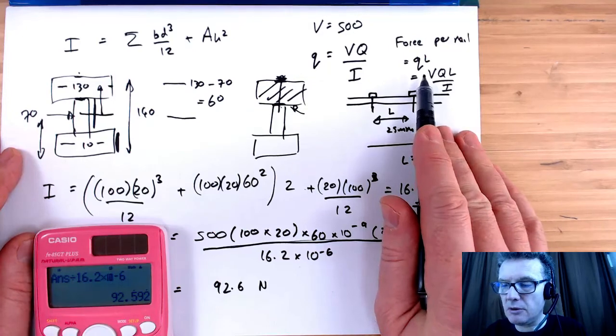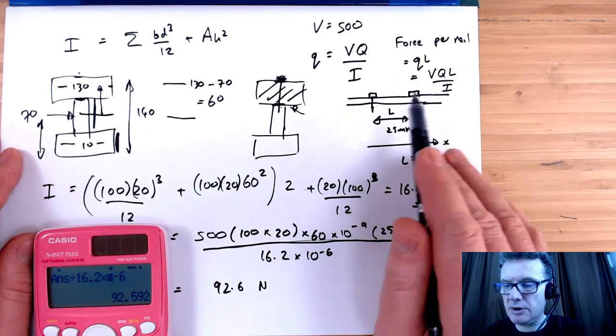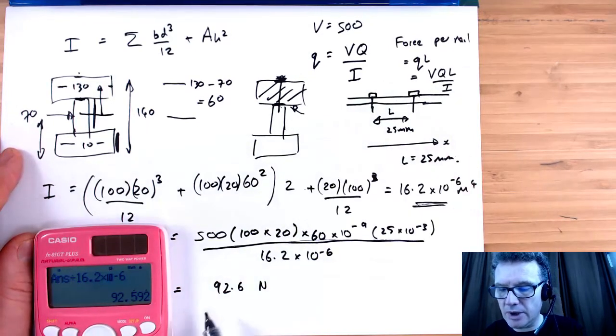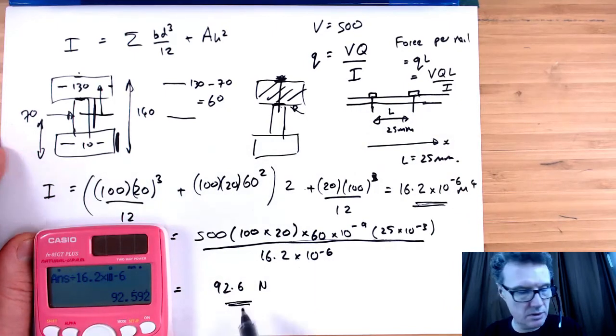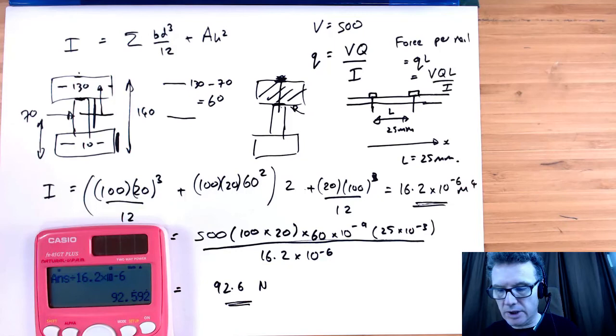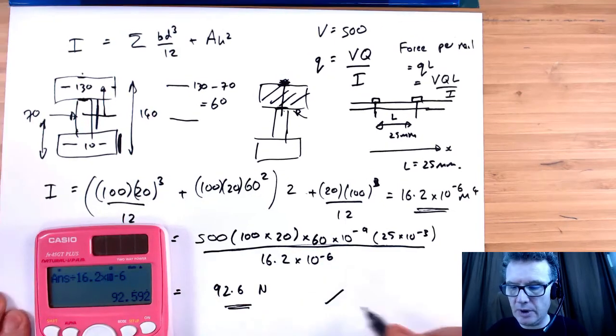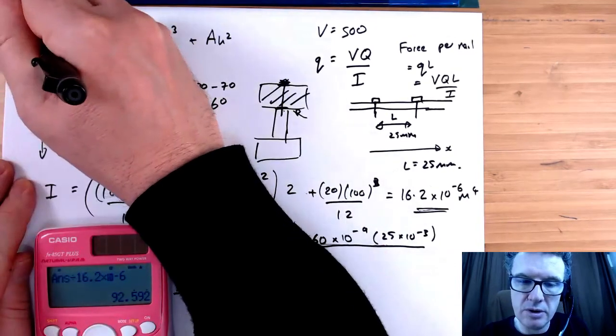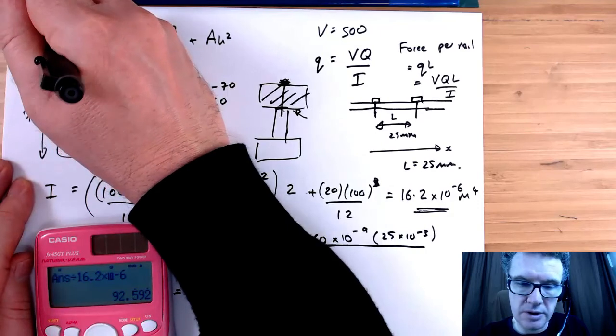So that gives me 92.6 Newtons. Notice the units here: this is force per unit length. I've multiplied it by the length where I'm applying the force every time, and we end up now with just a force. Okay, that's fine, that's correct. So that's question 6.2.